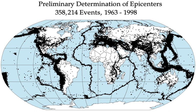Most of the world's earthquakes — 90 percent — and 81 percent of the largest take place in the 40,000-kilometer long, horseshoe-shaped zone called the Circum-Pacific Seismic Belt, known as the Pacific Ring of Fire, which for the most part bounds the Pacific Plate. Massive earthquakes tend to occur along other plate boundaries too, such as along the Himalayan mountains, with the rapid growth of megacities such as Mexico City, Tokyo and Tehran. In areas of high seismic risk, some seismologists are warning that a single quake may claim the lives of up to 3 million people.